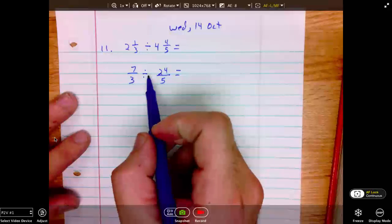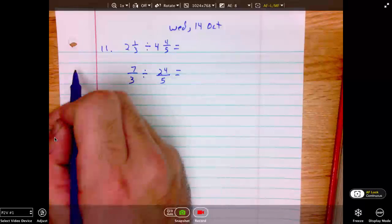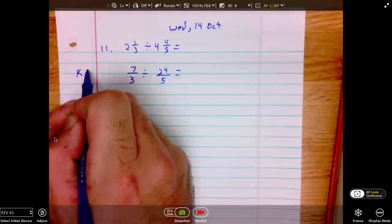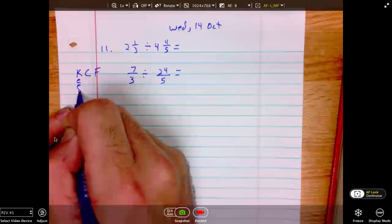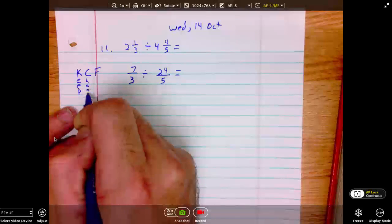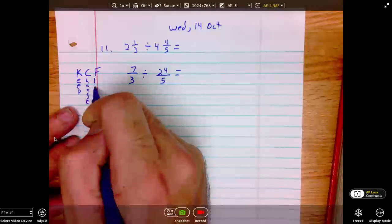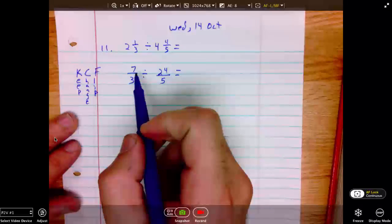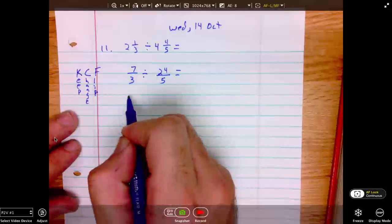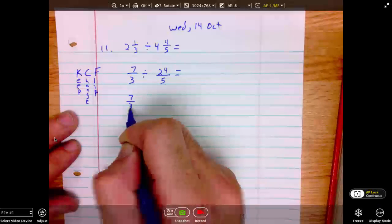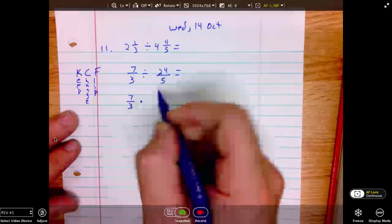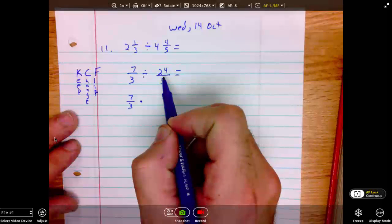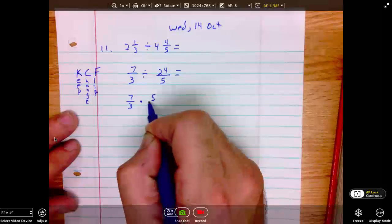When we divide, we will keep, change, flip. Keep, change, flip. Keep the first term the same, 7 over 3. Change the divide to a multiply. And flip over the second fraction, the reciprocal, we say.